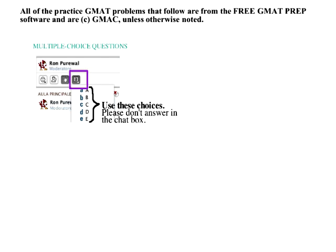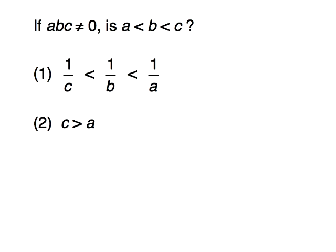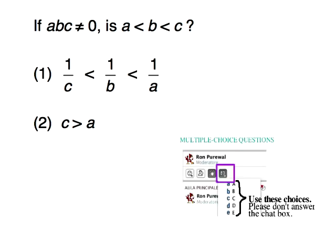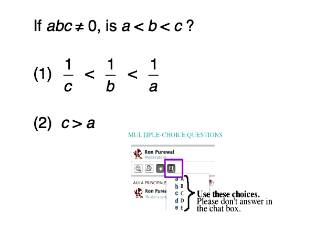Let's do a problem. This one is actually not from GMAT prep — this one is from ours. We do assume a certain level of basic literacy at data sufficiency. We assume you know the data sufficiency answer choices — what A, B, C, D, and E are — and where to indicate your multiple choice answers. This one is from our tests; in fact, I wrote this problem.